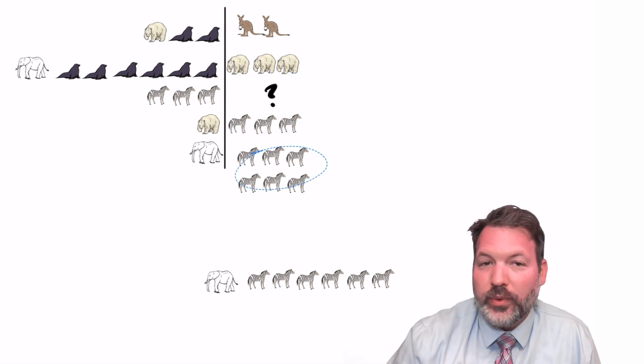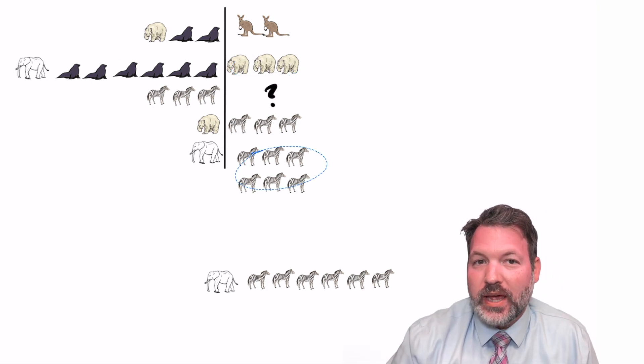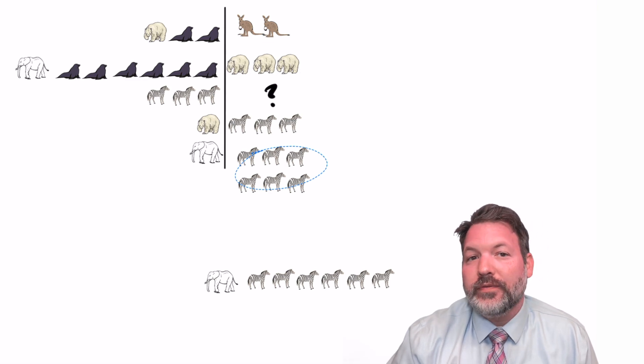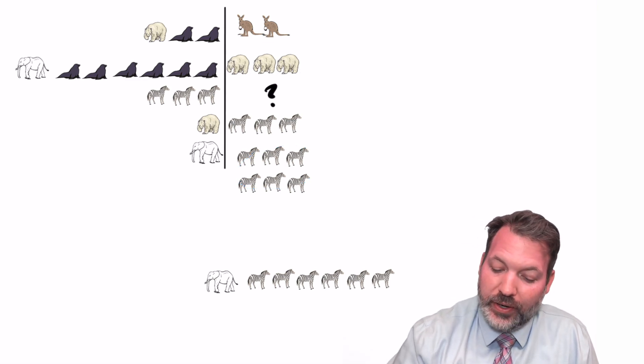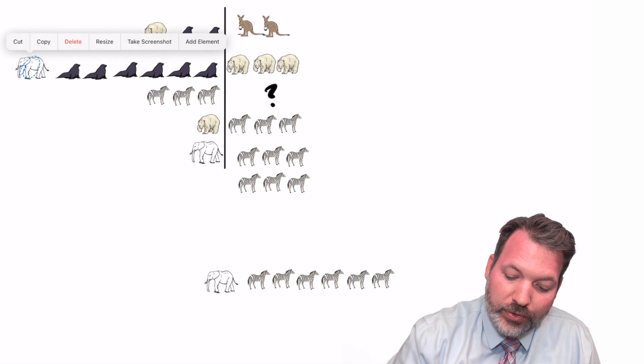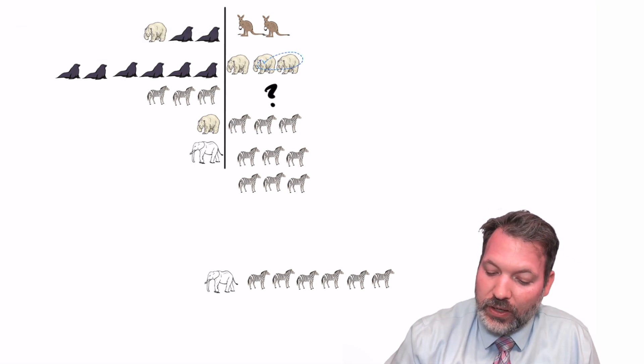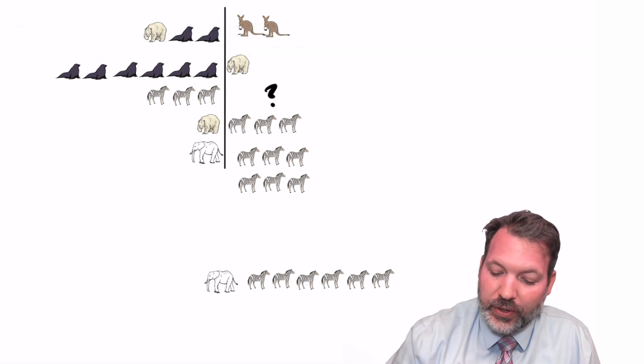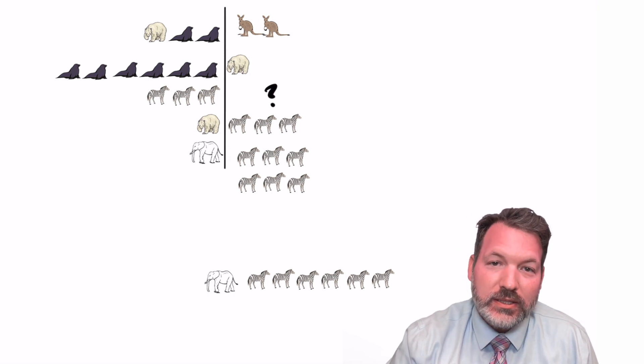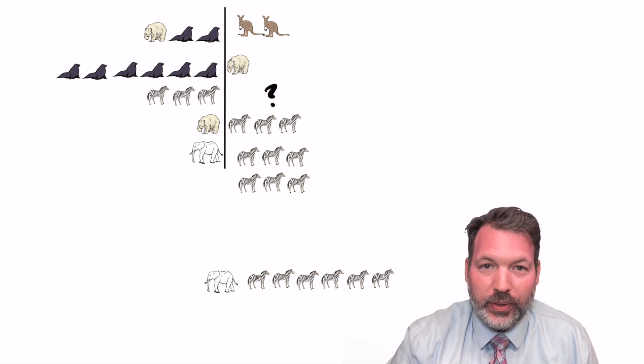But remember, the way that we figured out an elephant was the same as six zebras in the first place is that an elephant was the same as two polar bears. And so I can get rid of a couple more things. I can delete that elephant, I can delete two of these polar bears, and I can now see that six seals weigh the same thing as a single polar bear.